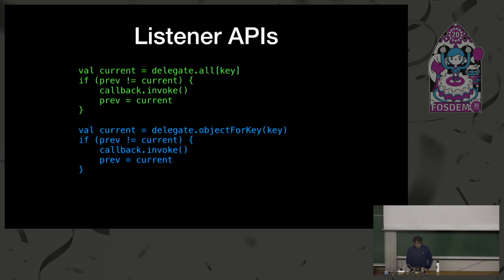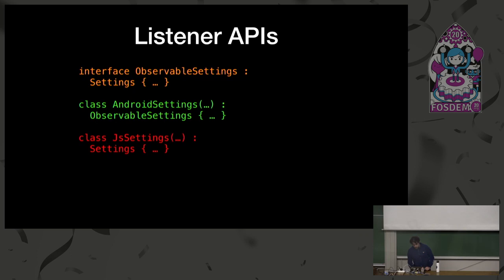That was all right for a little bit, and then I added JavaScript support and had the same problem all over again. It turns out the local storage APIs do provide ways to listen for updates, but they're basically built for talking to other processes and other windows, and I haven't found a way to make it work the same way the Android and iOS implementations do. Where I landed was splitting the interface: I have an ObservableSettings interface that holds all the listener APIs, and Android and iOS implement that. JavaScript just implements the base Settings interface, so in your common code you can check whether you're dealing with Settings or ObservableSettings and only interact with the listeners when you are observable.